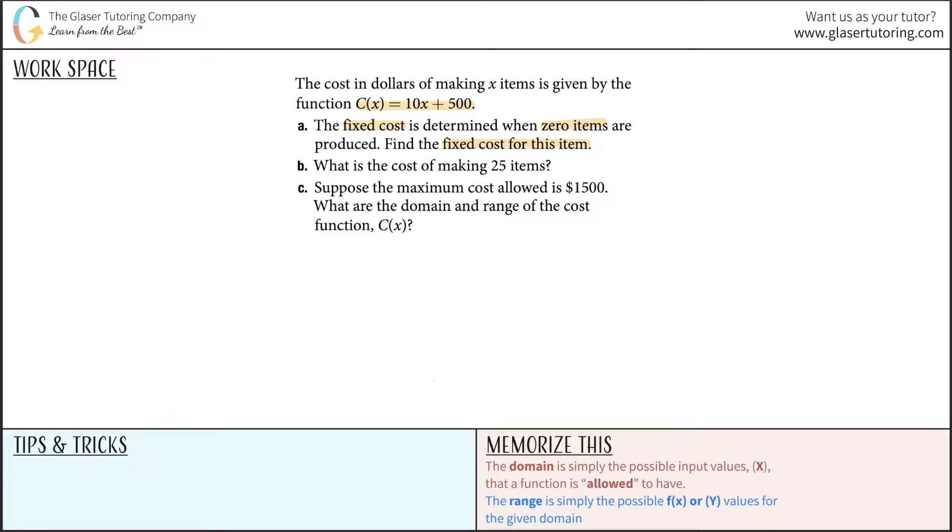This one isn't that bad. For letter A, let's write down the original function. C(x) is equal to 10x plus 500, where C(x), or basically C, represents the cost of making x items.